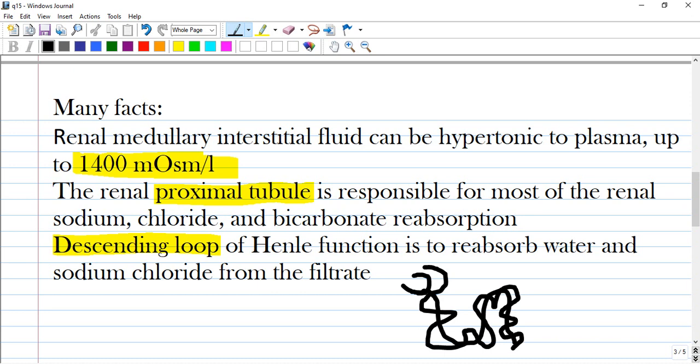So in the proximal tubule most of the substances are reabsorbed: chloride, sodium, bicarbonate and proteins. And it's like 50 or 70 percent of all the substances are reabsorbed in this area.